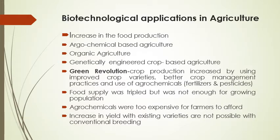As we all know, population is increasing day by day, and to feed this huge population we have to increase food production. To increase food production there are three approaches. Agriculture is of three types: number one, agrochemical-based agriculture; number two, organic agriculture; and number three, genetically engineered crop-based agriculture. In agrochemical-based agriculture there is the use of fertilizers and pesticides for high production or high yield, and this is what the Green Revolution was based on. Organic agriculture uses natural products that are useful for the environment as well as human health.